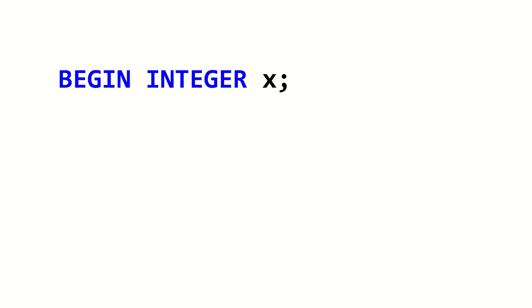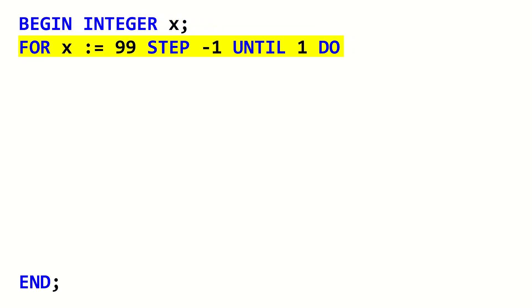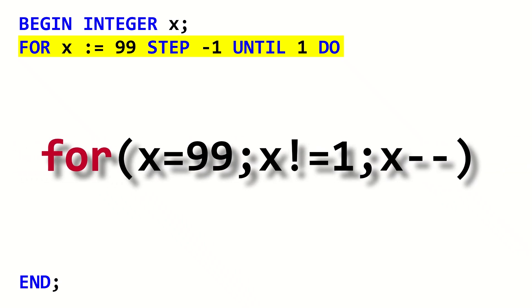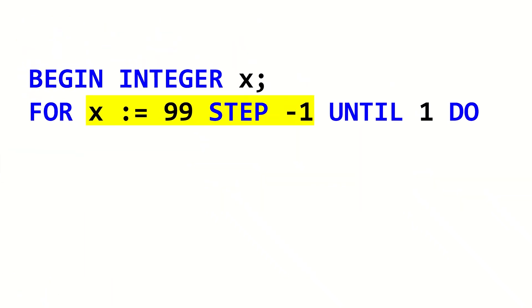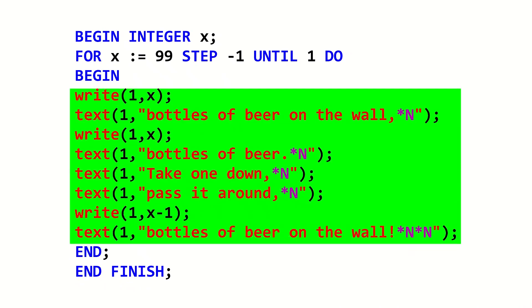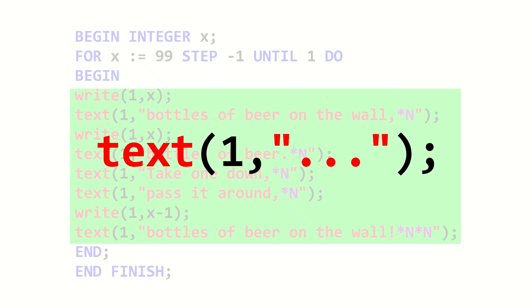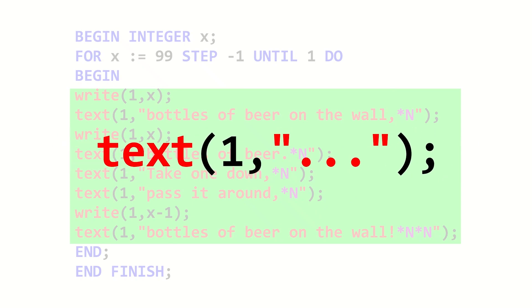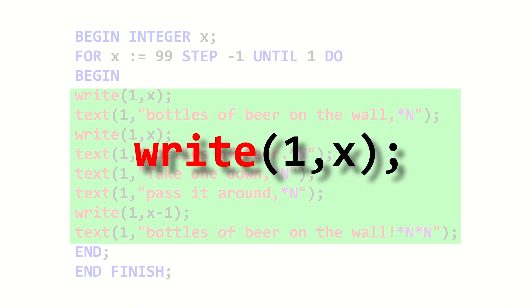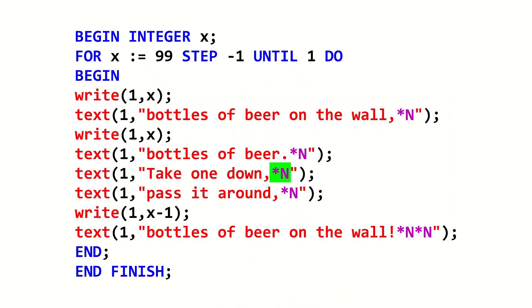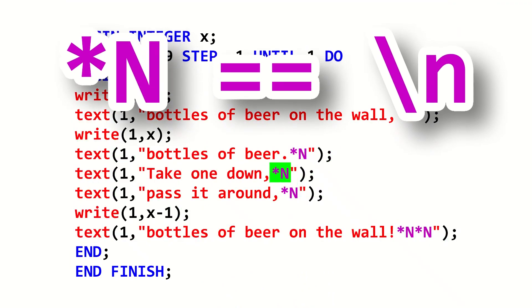Here's something more interesting: a program that prints the lyrics to the song '99 Bottles of Beer on the Wall.' Unlike the Hello World program, this program needs to store data, which is stored in the integer x. Here we have a for loop, formatted similarly to the C-style for loop, just in a different order. Instead of semicolons, the parts of the for loop are separated by the keywords step and until. x starts at 99 and has negative 1 added on each step until it hits 1. In this version of ALGOL, the text procedure is only used for printing text, while to print integers you must use write. This asterisk-n is the ALGOL way of writing the newline character.